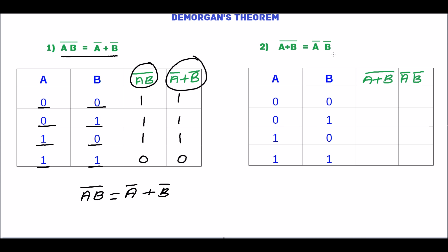The next theorem is: A plus B complement equals A complement into B complement. We will prove this. For A=0, B=0: A plus B is 0, and 0 complement is 1. A complement is 1, B complement is 1, and 1 into 1 equals 1.